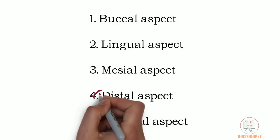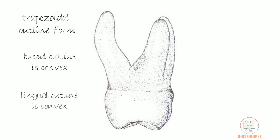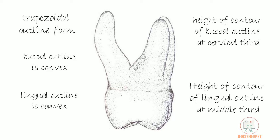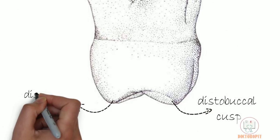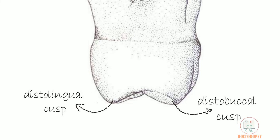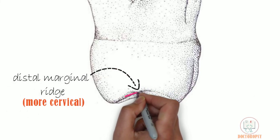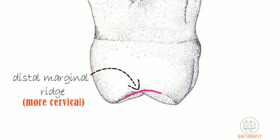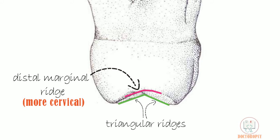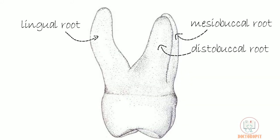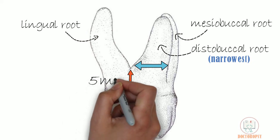Coming to the distal aspect, the gross outline is similar to the mesial aspect. Some differences are: only the distal cusps — distobuccal and distolingual — are seen from this aspect. The distal marginal ridge is slightly more cervical than the mesial marginal ridge, because of which the triangular ridges on the occlusal surface are visible. All three roots are visible from this aspect. The distobuccal root is narrowest at its base among all three roots. The bifurcation is more apical on the distal side, about 5 mm from the cervical line.